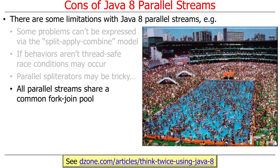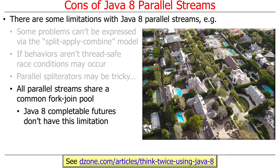An interesting quirk is that all parallel streams in a process share a common fork-join pool by default. You could have lots and lots of parallel streams all using the same pool. Interestingly, Java 8 completable futures — which we'll talk about next — don't have this limitation. You can have your own custom pool unique to your particular completable future chain, which gives you a bit more flexibility. By default it uses the common fork-join pool, but it is possible to override that if you choose.